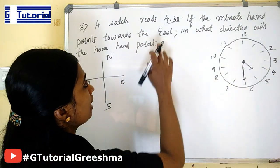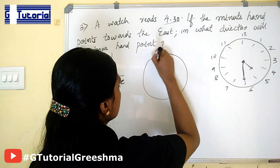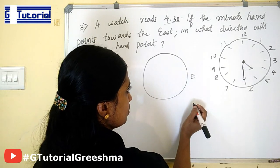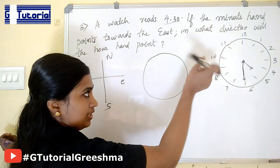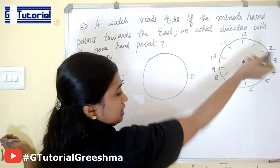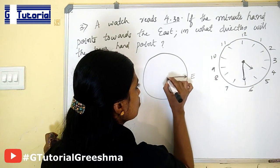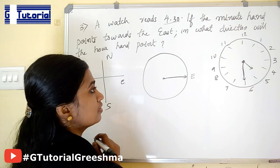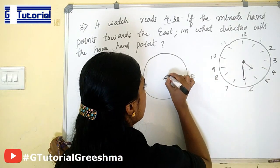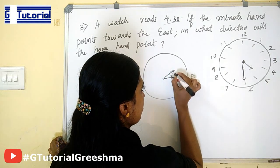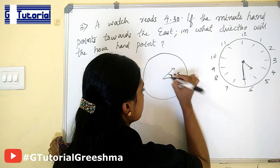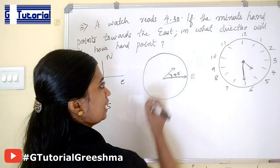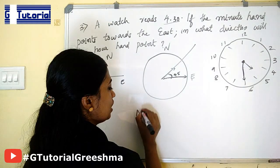Now we can redraw the figure such that the minute hand points towards east. We are rotating it in a clockwise direction. First place the minute hand pointing east, then place the hour hand. The hour hand will be pointing towards north-east since the angle between them is 45 degrees. So the direction of the hour hand is between north and east — it is in the north-east direction.